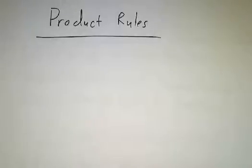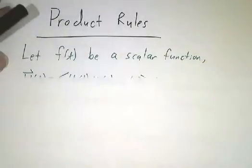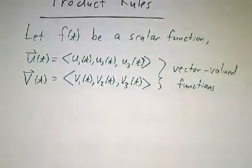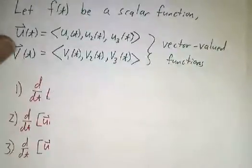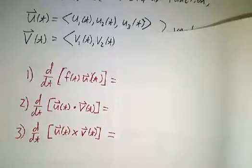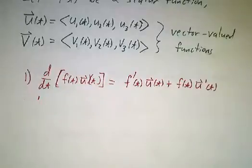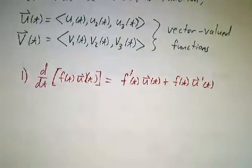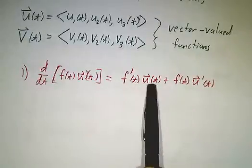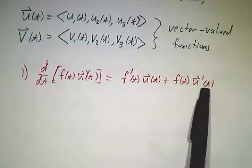Let's go over the rules for taking derivatives of products of vectors. Suppose we have a scalar function f and a couple of vector functions, u and v. We want to know how to take the derivative of a scalar multiple of u, the dot product of u and v, and the cross product of u and v. The answers are pretty straightforward — it looks just like the ordinary product rule. You take the derivative of the first times the second, plus the first times the derivative of the second.